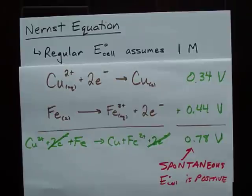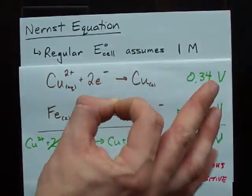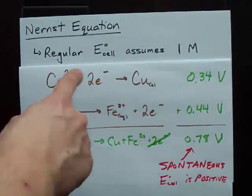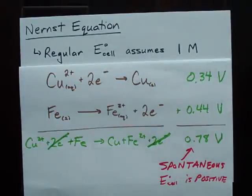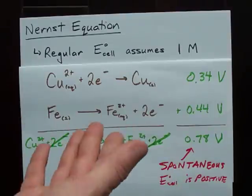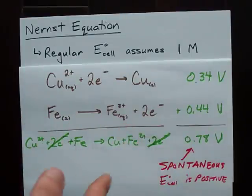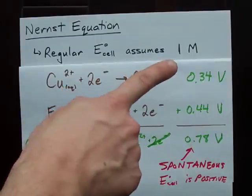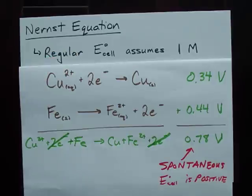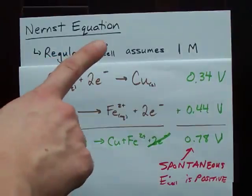What I didn't point out is that this is actually E naught cell. This is the cell potential if the aqueous components are at one mole per liter and if we had gases that the gas pressure is one ATM, but that's going to be rare for you. One mole per liter aqueous solutions makes this E naught cell.